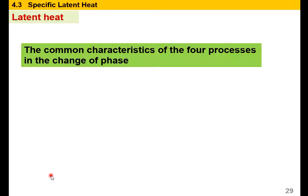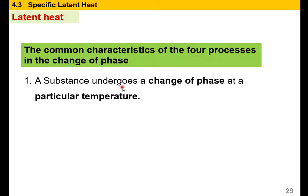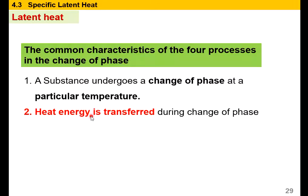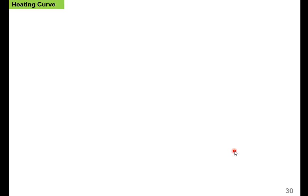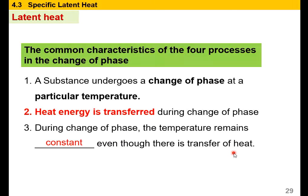Latent heat — four common characteristics of the four processes in the change of phase: A substance undergoes a change of phase at a particular temperature. The heat energy is transferred — either absorbed or released — during the change of phase. During change of phase, temperature remains constant even though there is a transfer of heat. These are the common characteristics.